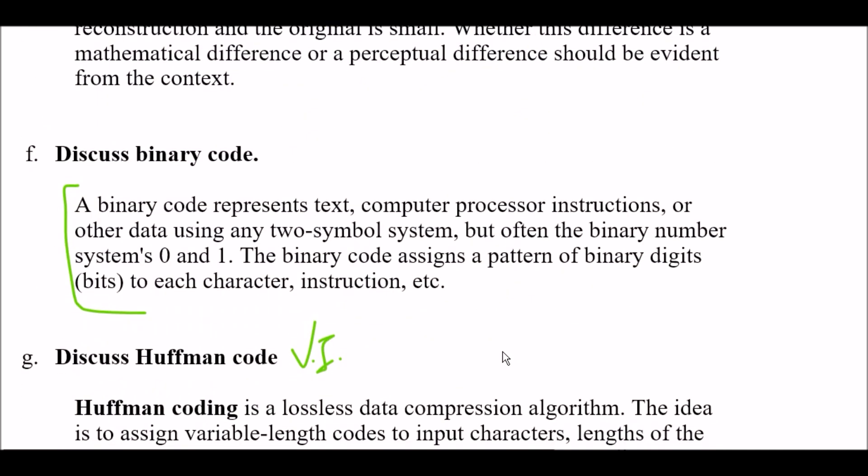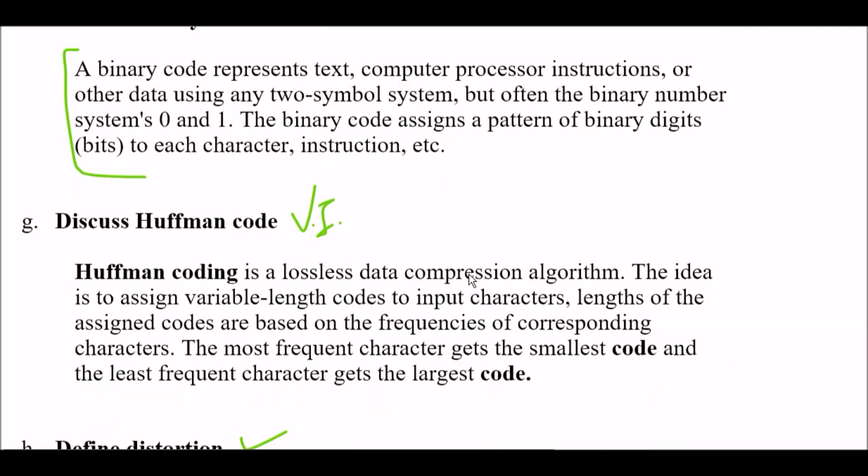Question F: Discuss binary code. A binary code represents text, computer processor instructions, or other data using any two symbol system, but often the binary number system's 0 and 1. So your binary code is based on only 0 and 1. The binary code assigns a pattern of binary digits - that is bits - to each character, instructions, etc.